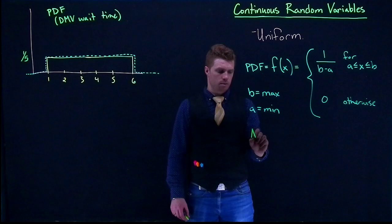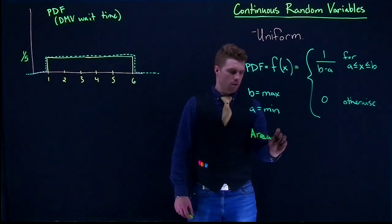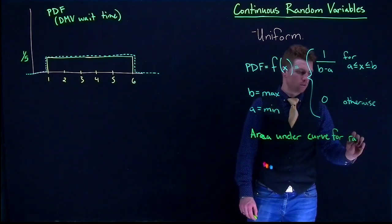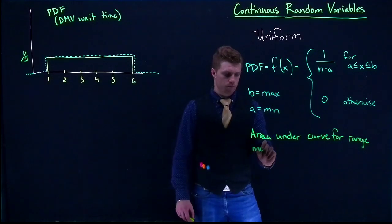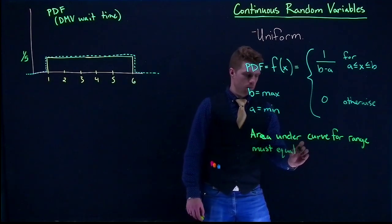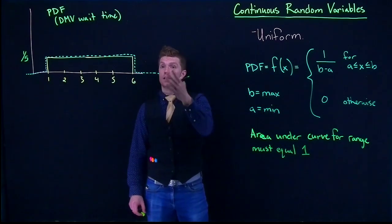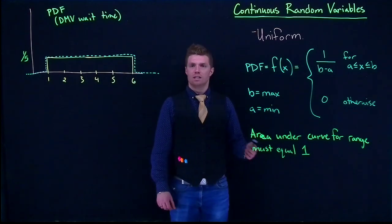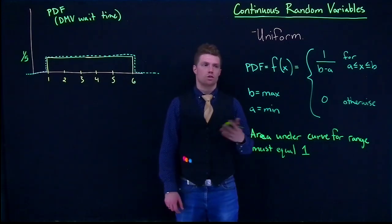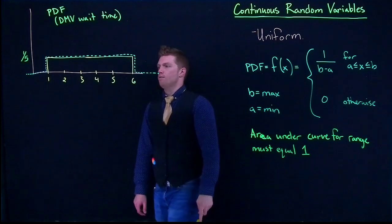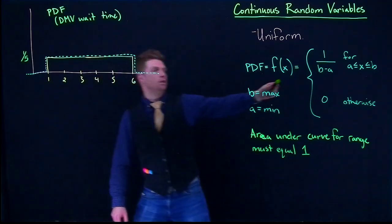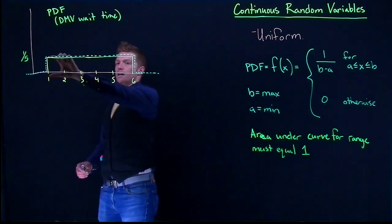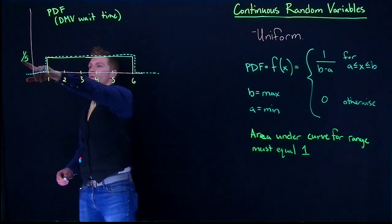The area under curve for range must equal 1. So let's see if that is true for here. Our range doesn't extend from negative infinity to positive infinity. A lot of these continuous random variables, that's what they go to. Sometimes you reach practical floors or ceilings. So we have from 1 to 6, we have one particular function. And we have another function everywhere else. Well, everywhere else, we just have a 0. So we really only have to worry about this region.